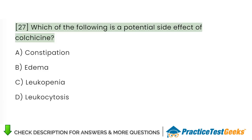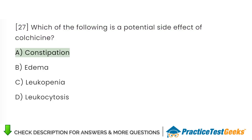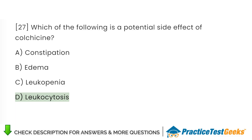Which of the following is a potential side effect of colchicine? A. Constipation. B. Edema. C. Leukopenia. D. Leukocytosis.